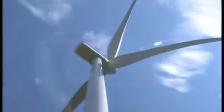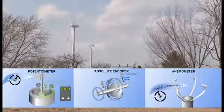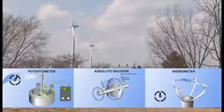Let's take a closer look at some of the sensors used in the yaw control system. Potentiometers, encoders, and ultrasonic sensors may be used to detect wind direction.